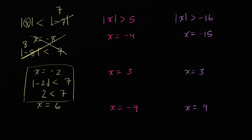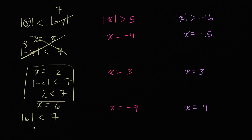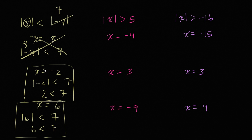The absolute value of negative 2 is going to be less than the absolute value of negative 7. Then finally, x equals 6. The absolute value of 6 — everywhere I see the x, I put the 6 there. If x equals 6, the absolute value of 6 is less than 7. Well, the absolute value of 6 is just 6; it's 6 to the right of 0. Is 6 less than 7? Yeah, sure — 6 is less than 7. So x equals 6 and x equals negative 2 both satisfy the inequality.